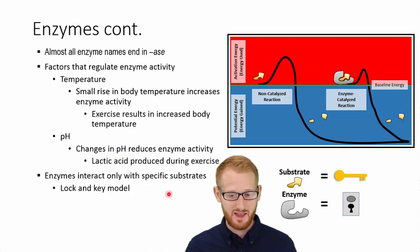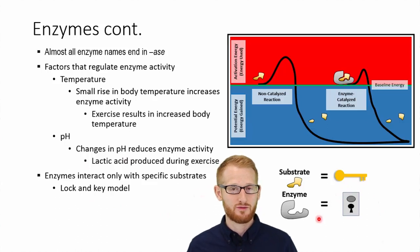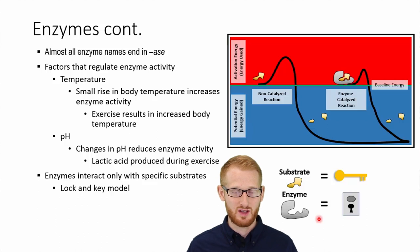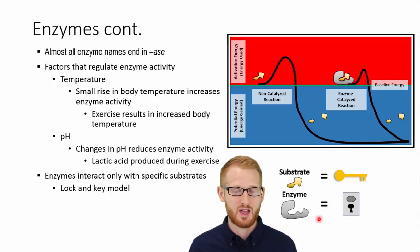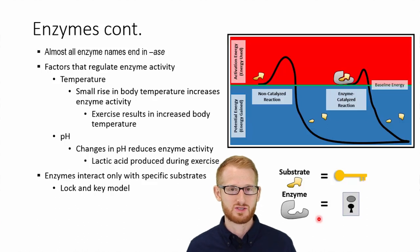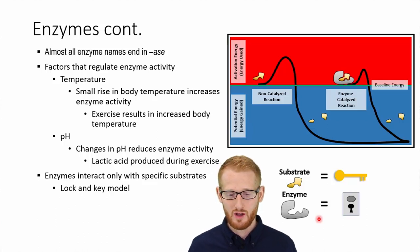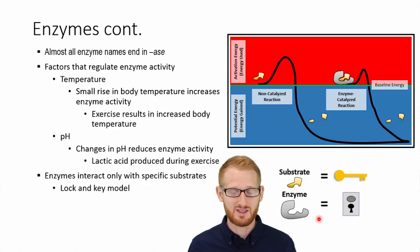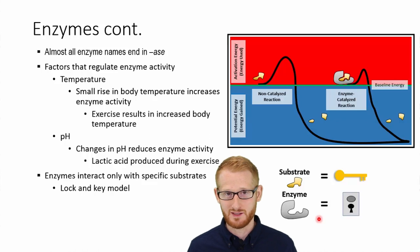The enzyme is this lock-and-key mechanism. If this lock and key somehow gets distorted or the shape changes — a conformational change — then the enzyme isn't going to work properly. That's essentially what happens when it gets too hot or the pH gets too low. The enzyme actually changes shape, so the enzyme and the substrate no longer fit together properly.